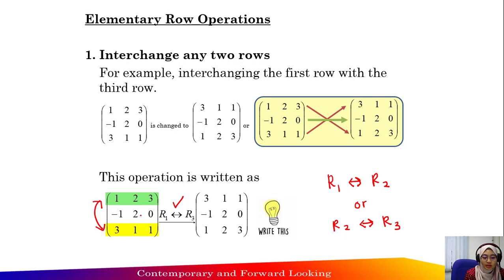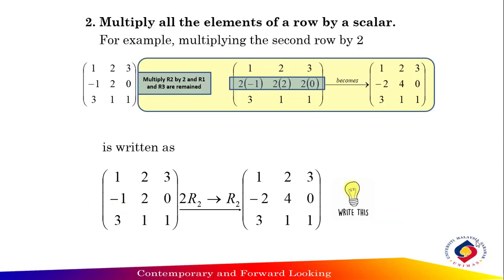For example, row one interchange row three: row one here will move downward and row three will move upward. This one is the original matrix and this one is the new matrix after interchanging.